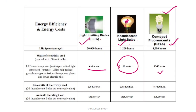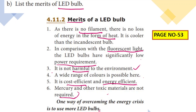LED diode bulbs replace the incandescent bulb and compact fluorescent bulbs that we used to use. Let's look at the figure. There is a filament in the incandescent light bulb, and this is the compact fluorescent bulb. The first advantage is that there is no filament in LED bulbs. Because of filament, energy is lost as heat. The incandescent bulb produces a lot of heat when electricity passes through it, but the LED bulb is cooler than the incandescent bulb. This is the most important merit.